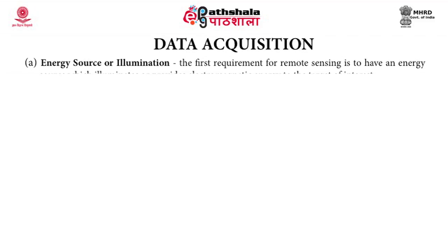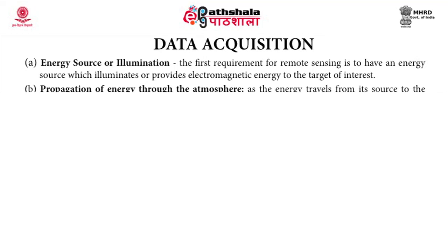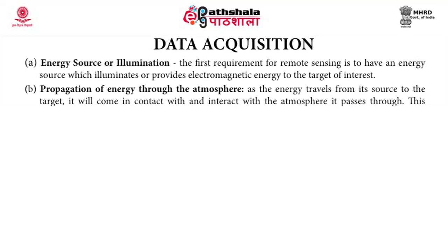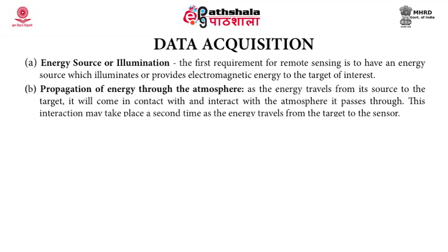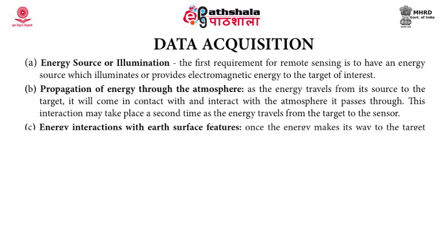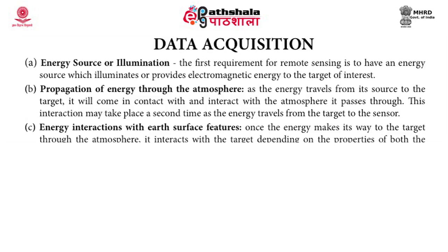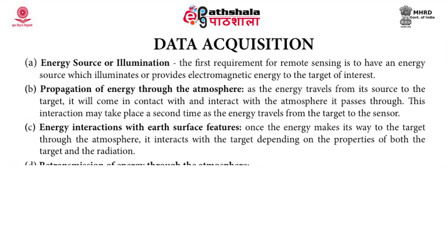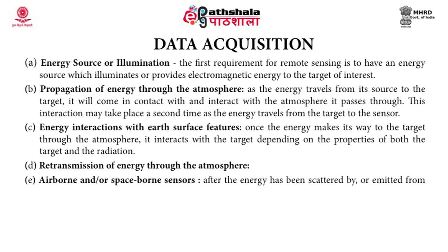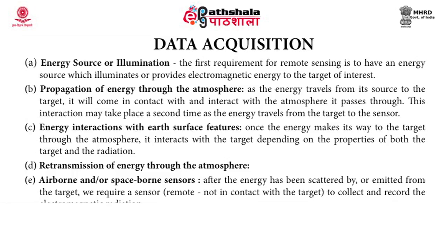The first requirement for remote sensing is to have an energy source which illuminates or provides electromagnetic energy to the target of interest. The most common is solar energy, which has a wide range of spectrum and can be used for remote sensing studies. The second step is propagation of energy through the atmosphere — as the energy travels from the source to the target, it will interact with the atmosphere, and this interaction may take place again when the energy travels back from the target to the sensor. The third step is interaction with earth's surface features — once the energy reaches the target, it interacts with it depending on the properties of both the target and the radiation.